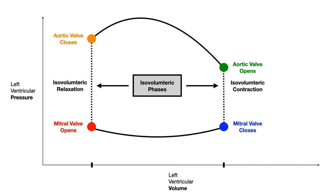Going from blue to green is called isovolumetric contraction — isovolumetric because volume stays the same, and contraction because it occurs during systole. Going from orange to red is called isovolumetric relaxation — isovolumetric because volume stays the same, but we're in diastole so pressure decreases. You can infer these names directly from the graph axes: if volume stays the same it's isovolumetric, and if pressure goes up it's contraction; if pressure goes down it's relaxation.